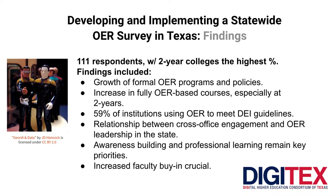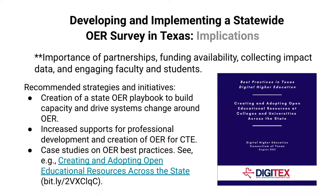Back in 2019, awareness building and professional learning were key priorities — they remain so. Similar to what Una mentioned, faculty buy-in is very crucial and even increased for the 2021 survey. Implications include the importance of partnerships, funding availability, collecting impact data, and engaging faculty and students. Recommendations include creation of a state OER playbook to build capacity and drive systems change, increased support for professional development and creation of OER for career and technical education, and a series of case studies on OER best practices in Texas — the first of which our organization just recently released.